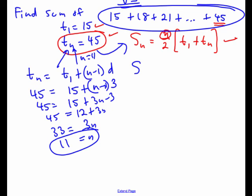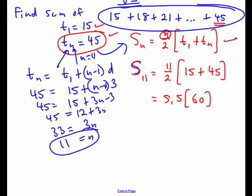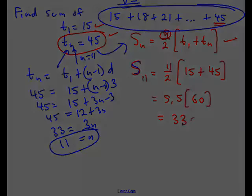So s11 is going to be 11 over 2, 15 is the first term, 45 is the nth term, and we'll work all this through, and when you do all that, it's going to come out to 330.